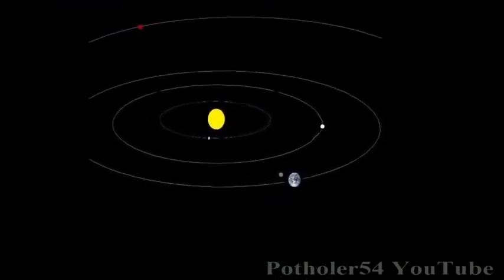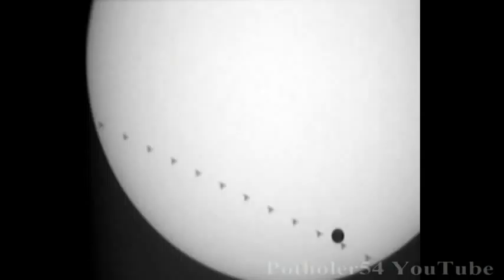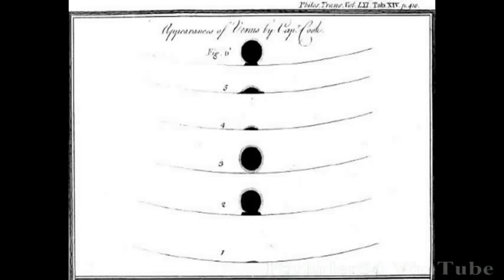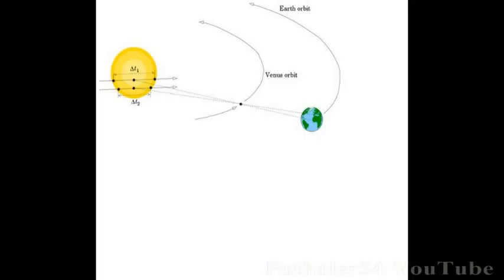In the 18th century, a transit of Venus across the sun, timed at opposite ends of the Earth, made it possible to calculate the exact distance of the sun, and by extension, the distances of all the known planets.